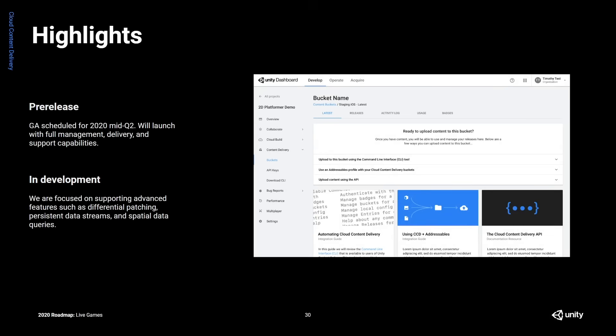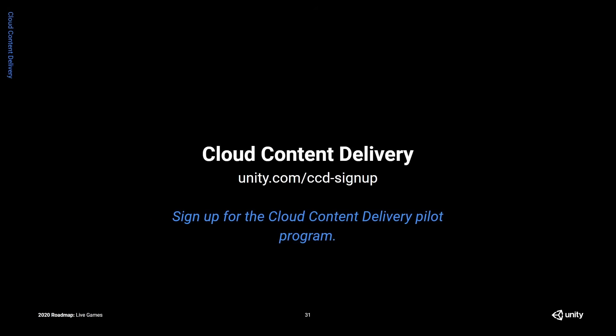The plan for Cloud Content Delivery is that it will be generally available quite soon — middle of Q2 — and it will be fully featured at that point with no phased rollout; it will just work out of the box. We're also pushing for advanced features like differential patching and spatial data queries to make it more powerful. Cloud Content Delivery is available now — go to unity.com/ccd-signup to sign up for the pilot program, which is kicking off now.